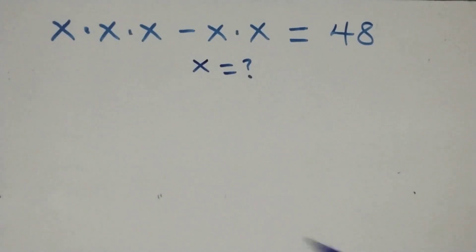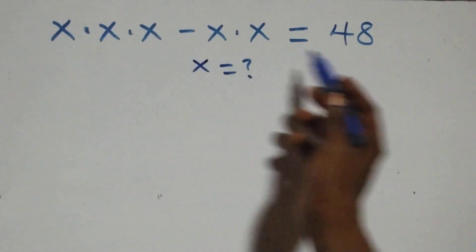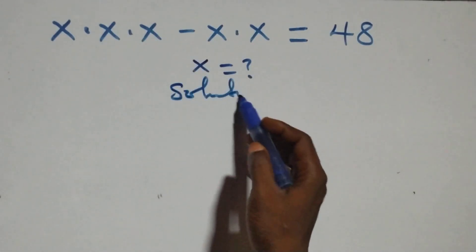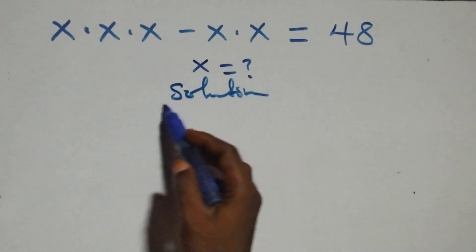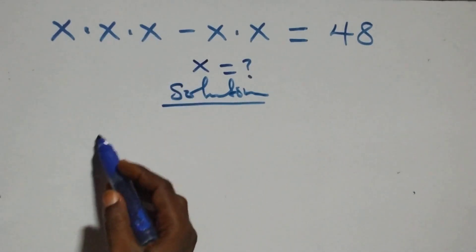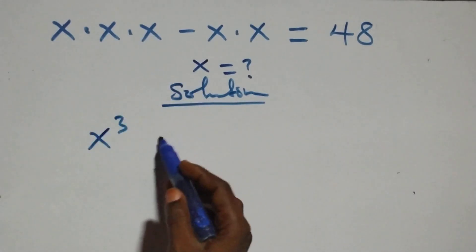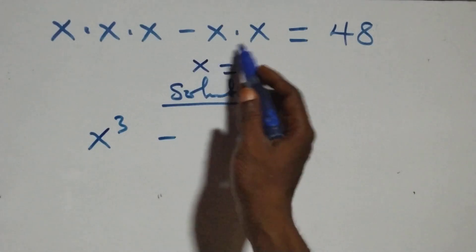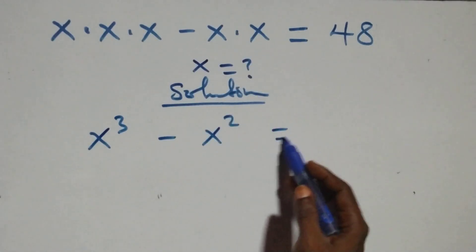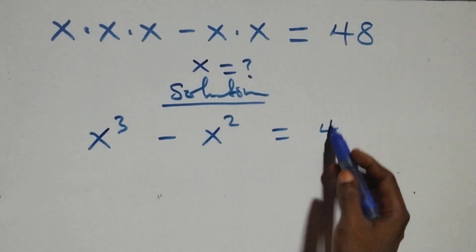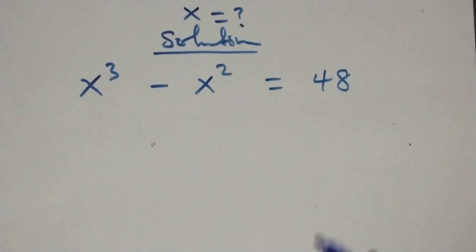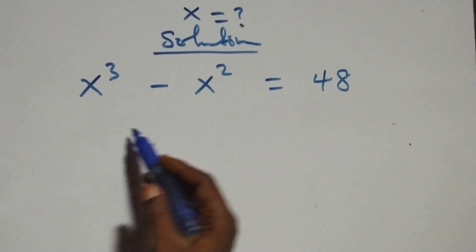Hello, welcome. Here we solve a nice algebraic equation. What we have here is x times x times x, that's x raised to the power 3, minus x times x, that's x raised to the power 2, equals to 48 on this side.